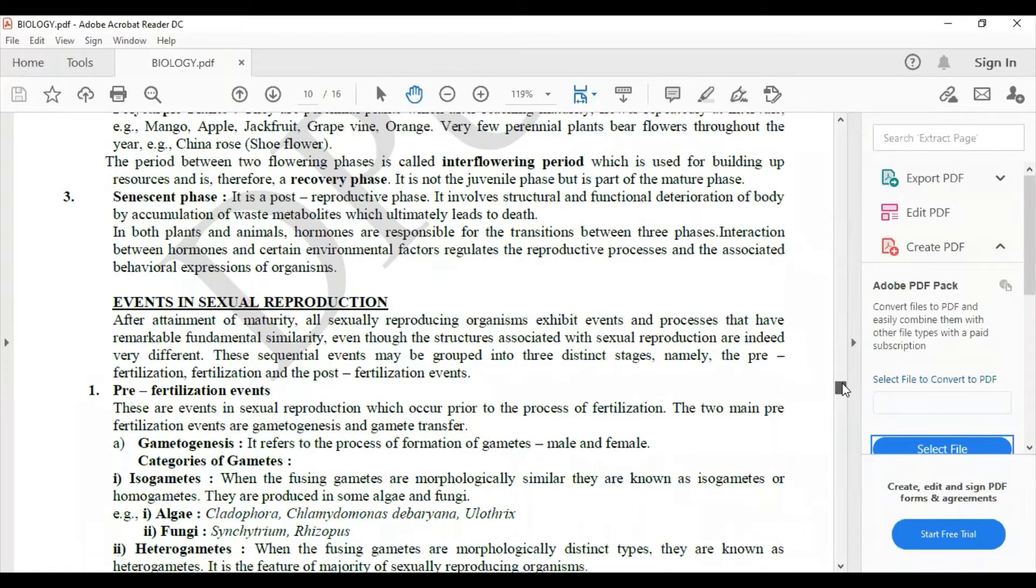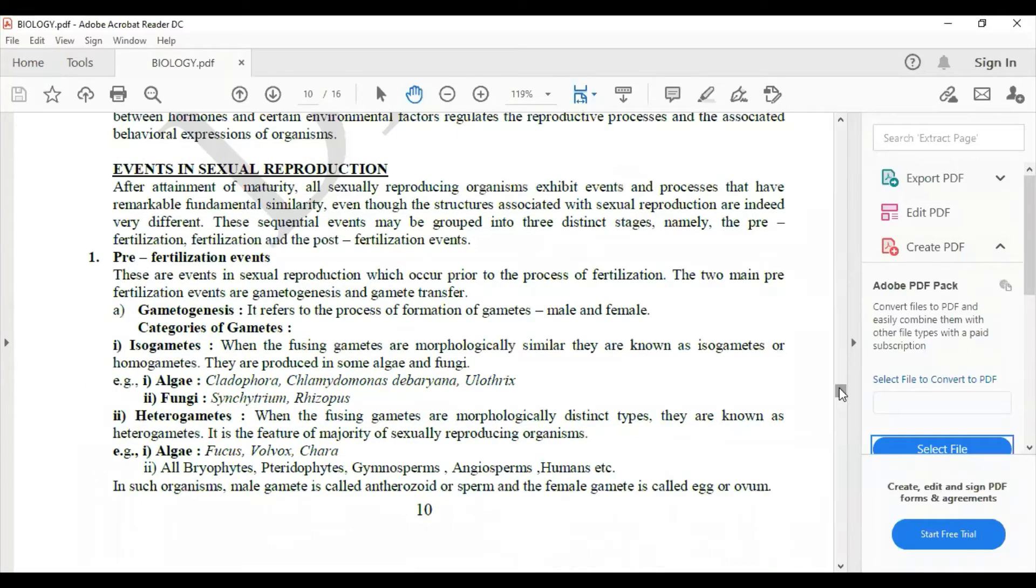Next, moving on to events in sexual reproduction. So the first phase is pre-fertilization events. Here there is an explanation of isogametes, heterogametes.